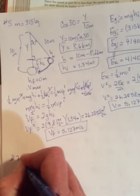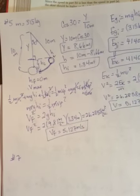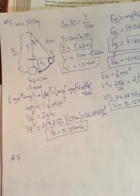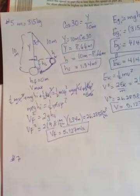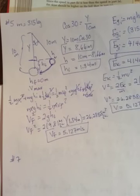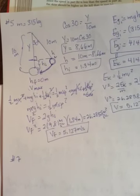All right, the last one I asked you to do was number 7, which says a 32 kilogram crate slides down a frictionless ramp. The initial velocity at the top of the ramp is 3.2 meters per second.